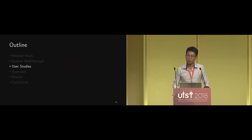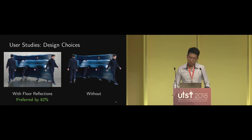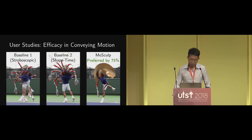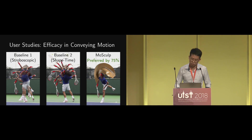Before talking about the implementation, let me briefly mention our user studies. Some design choices are crucial to the perception of 3D information, so we conducted user studies to evaluate our default choices. For instance, we asked users whether they preferred rendering with floor reflection or without — 82% of Amazon Mechanical Turkers preferred with floor reflections, so we set this as default. We also evaluated how effective motion sculptures are in conveying motion information: 75% of participants think motion sculptures are better at conveying motion information than the two baselines, stroboscopic photography and shape-time photography. This supports our contribution that motion sculptures help us better understand motion.